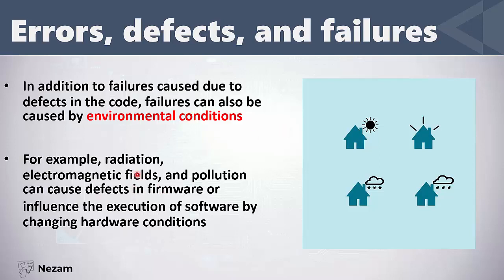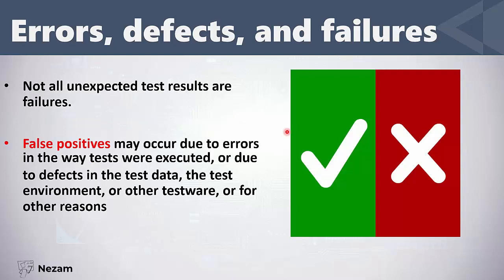There are also external factors caused by environmental conditions — things we can't control — like radiation, electromagnetic fields, or pollution. These can cause problems in the firmware, operating system, or hardware we use. In such cases, our application may be fine, but the environment it runs on has problems, causing failures that are not our fault. However, not all unexpected test results are failures — there is something called a false positive, where the tester made a mistake in execution, entered wrong test data, or used the test environment incorrectly, and detected a defect that isn't actually there.